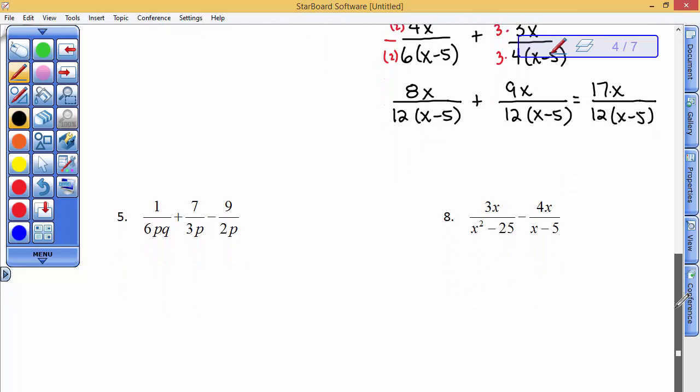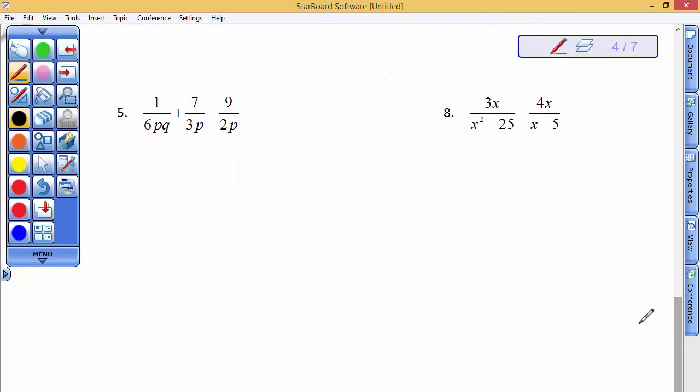Let's keep going. Again, you can pause any time and do these problems on your own. So, you have to factor your denominators. So, this factors into x plus 5 times x minus 5. This denominator is just x minus 5. So, my least common denominator for this problem is the x plus 5 and the x minus 5.